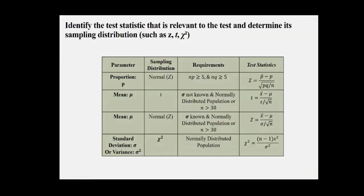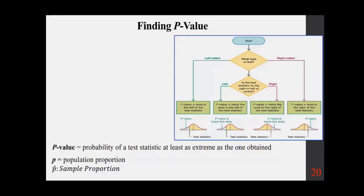When calculating the test statistic, it depends on the parameter: for proportion, use Z = (P̂ − P) / √(PQ/N); for mean with known sigma, use Z = (X̄ − μ) / (σ/√N); for mean with unknown sigma, use the T statistic; for standard deviation or variance, use chi-squared = (N−1)S²/σ².